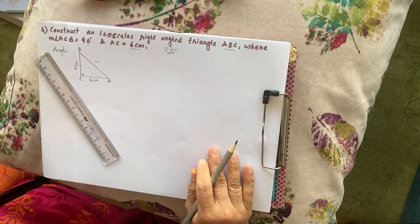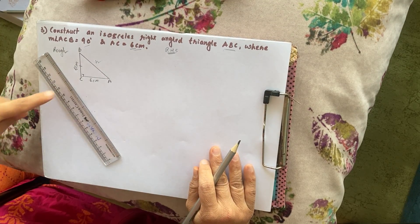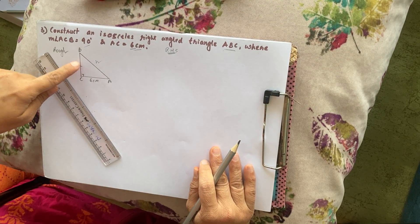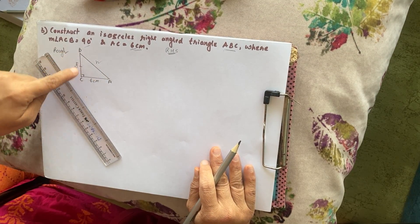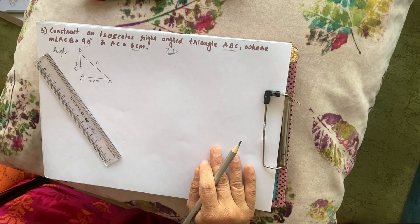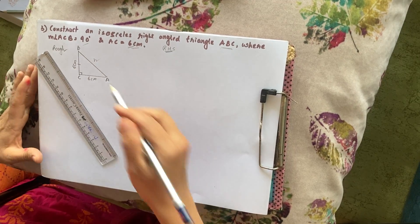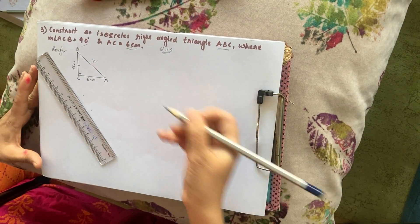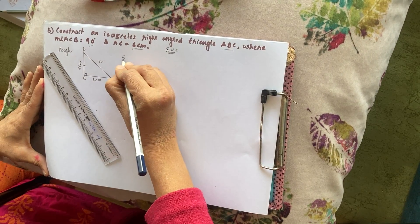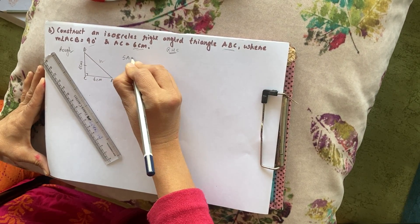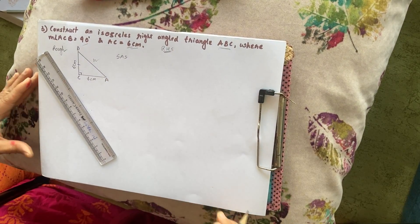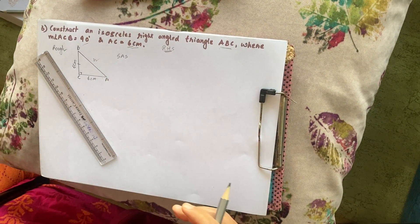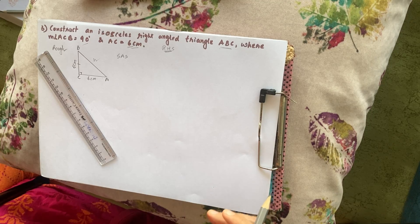It is okay because you can use the SAS property here — Side Angle Side. You can use SAS property. So first of all, we will draw AC of 6 centimeters with the help of a scale.